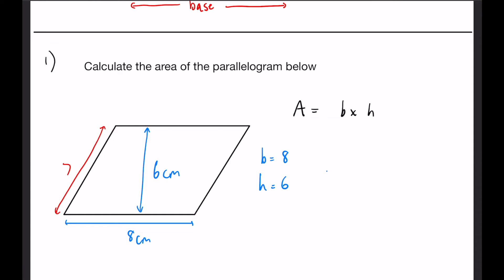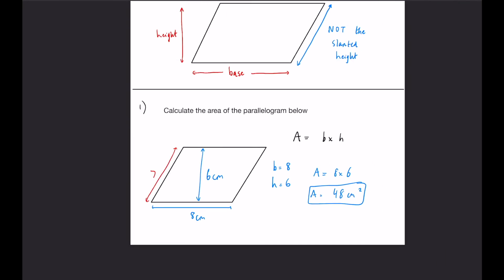So all we have to do from here is substitute into our equation A equals 8 multiplied by 6, 8 times 6 is 48 centimeters squared and that is our final answer.